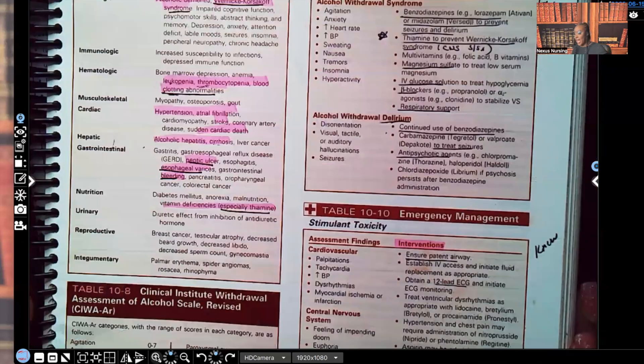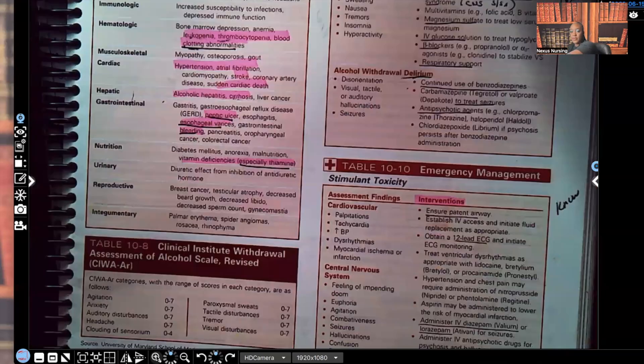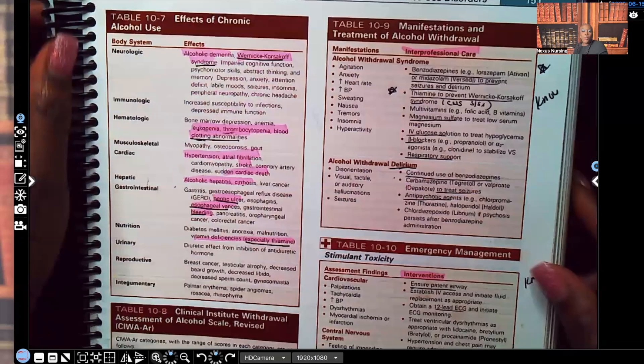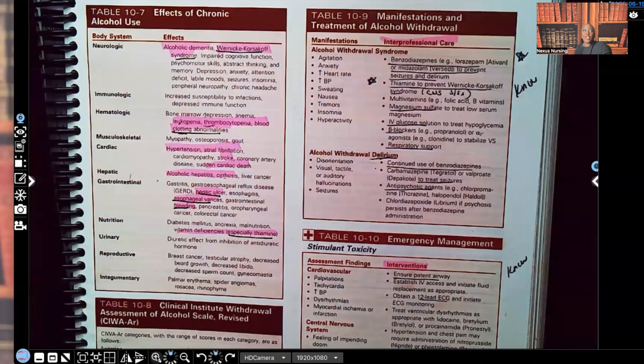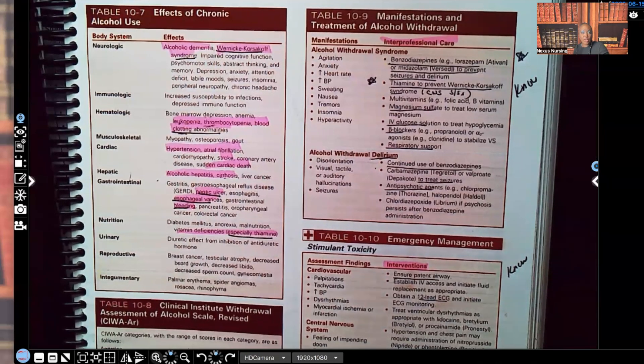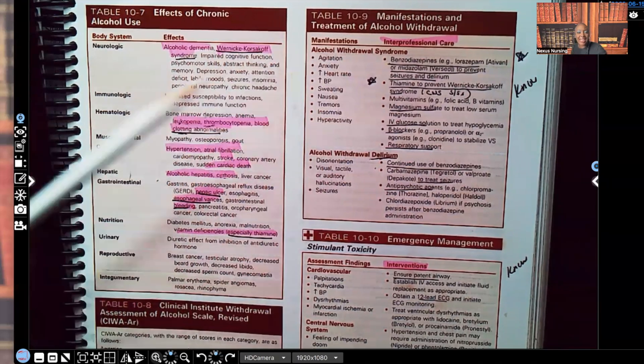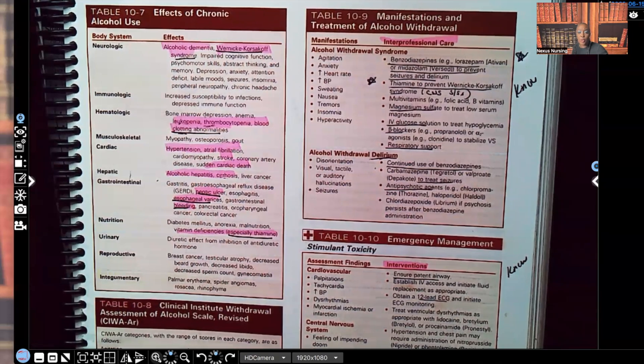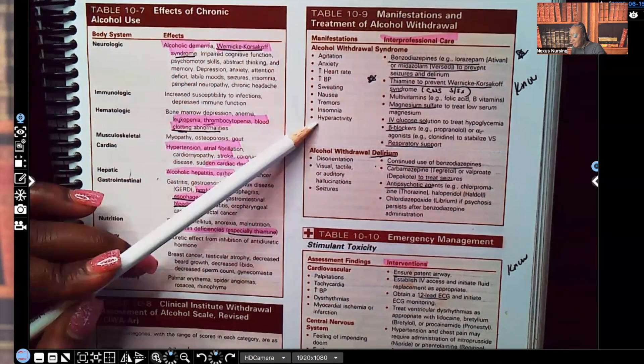Manifestations of alcohol withdrawal. What's this patient going to look like when they're actually going through withdrawal? Remember, there's no antidote, right? So they're going to have to wait it out and hopefully they survive. You're going to try to help them survive. Look at the signs and symptoms of what that patient's going to look like when they're withdrawing. By the way guys, alcohol withdrawal is possibly deadly. So you have to watch your patient very closely. Agitation, anxiety, heart rate's going to be increased, blood pressure is going to be increased, sweating, nausea, tremors, insomnia, and hyperactivity.